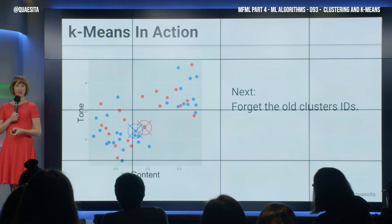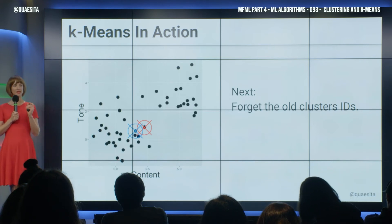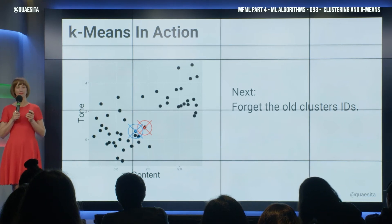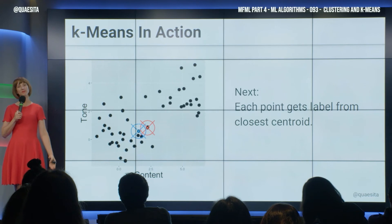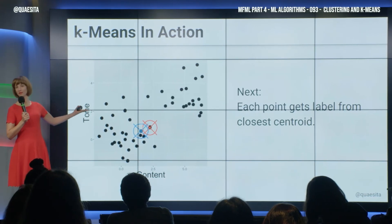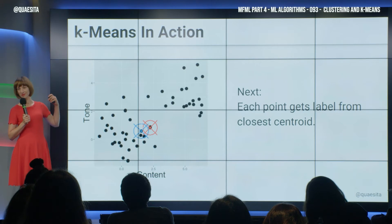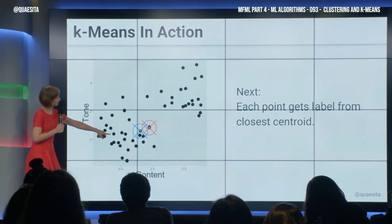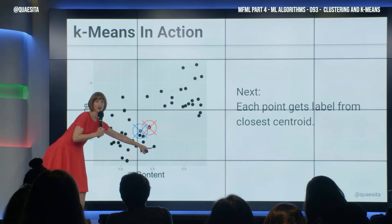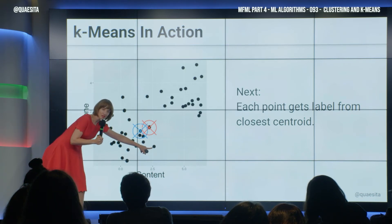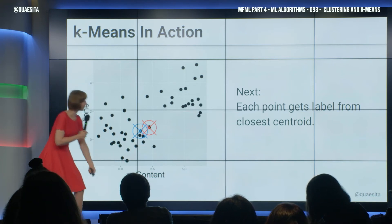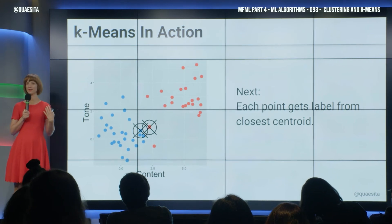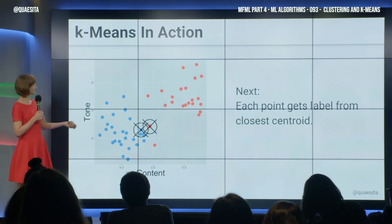We will forget the old cluster IDs. And then we are going to do something of such astounding brilliance, you will never see it coming — we're simply going to give each point the color of the centroid closest to it. So, red or blue for this one? Red. Red or blue for this one? Blue. How about this one? That is why we let the machine do it — it is better at this than you are. Turns out that's red. How do you feel about the clustering now? We're getting somewhere. Looking better.